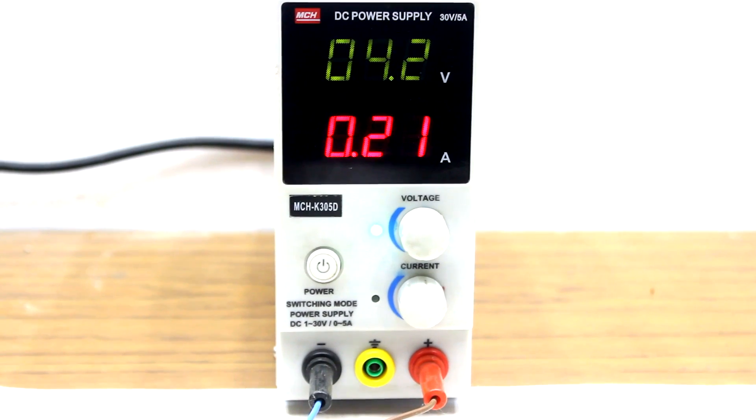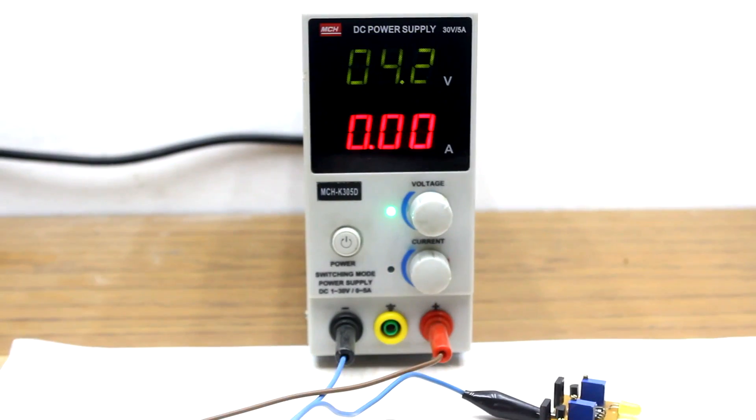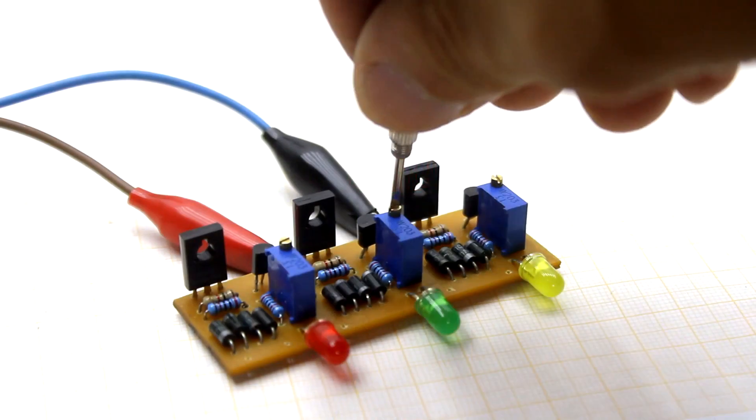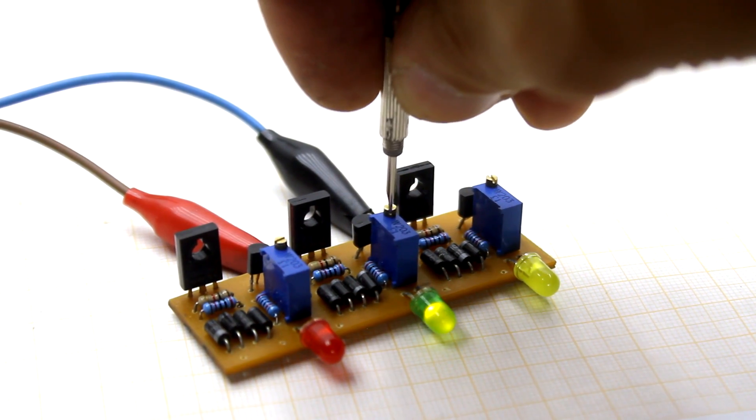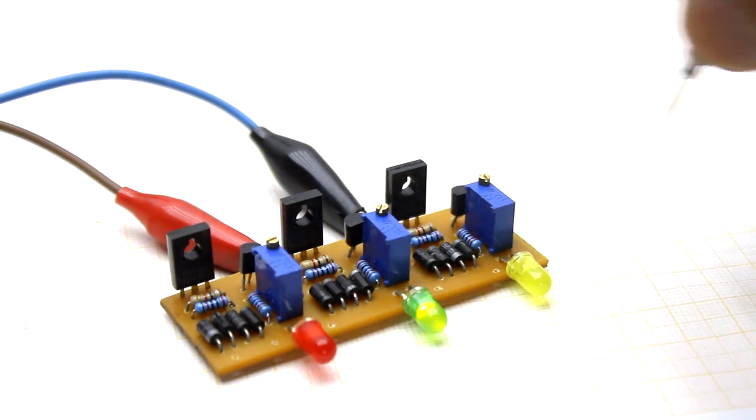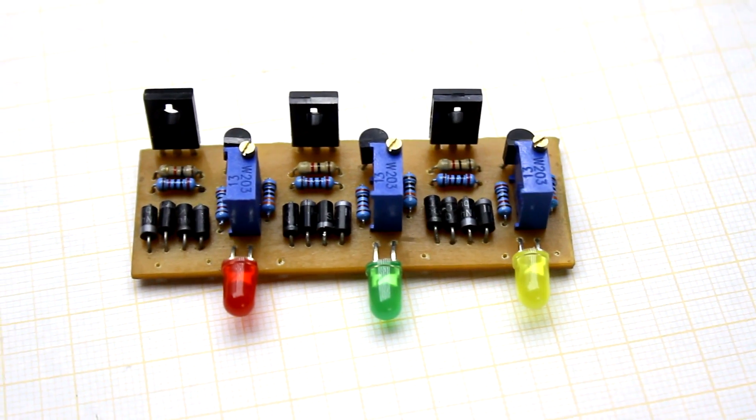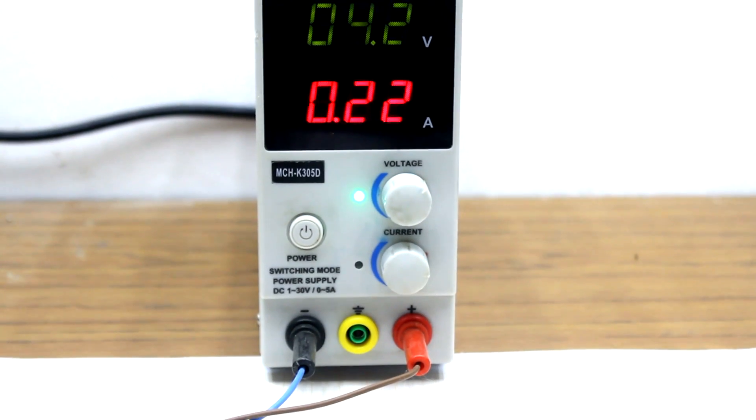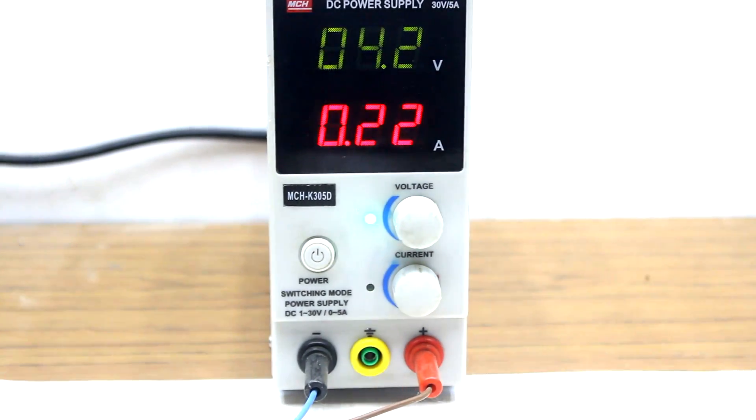Adjustment of the circuit is simple. Set the voltage in the region of 4.2 volts on the laboratory power supply. Then connect the board to it and slowly rotate the trimmer until the LED illuminates. We adjust all balancing units so that the current consumption or balancing current for all was the same. In my case, it is 160 to 180 mA.